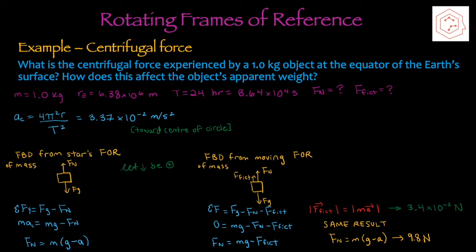Moving on to an example using centrifugal force: what is the centrifugal force experienced by a one-kilogram object at the equator of Earth's surface, and how does this affect the object's apparent weight? We know the mass, the radius of Earth from the back of the textbook, and the period of Earth's full revolution is 24 hours, converting to seconds. We're solving for normal force and fictitious force. Using the formula for centripetal acceleration that includes period — 4π²r over T² — and plugging in the numbers, the centripetal acceleration is 3.37 × 10⁻² m/s² toward the center of the circle.